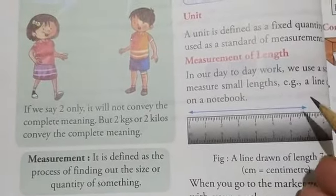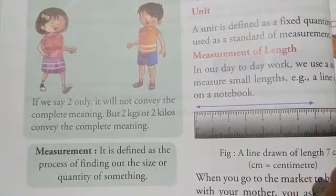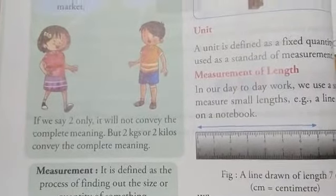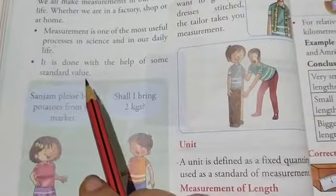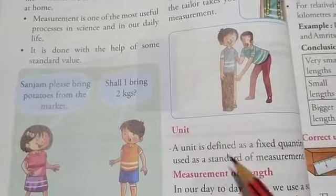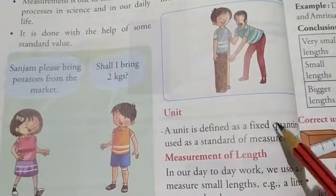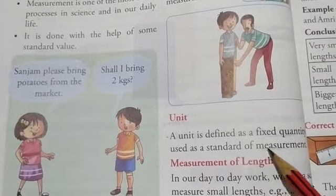Something can be anything. That can be the length of a cloth. It can be the weight of any object or it can be the temperature or the time. But measurement is done with the help of some standard value or standard quantity. And that standard value is known as unit. So how can we define a unit? A unit can be defined as a fixed quantity that is used as a standard of measurement.